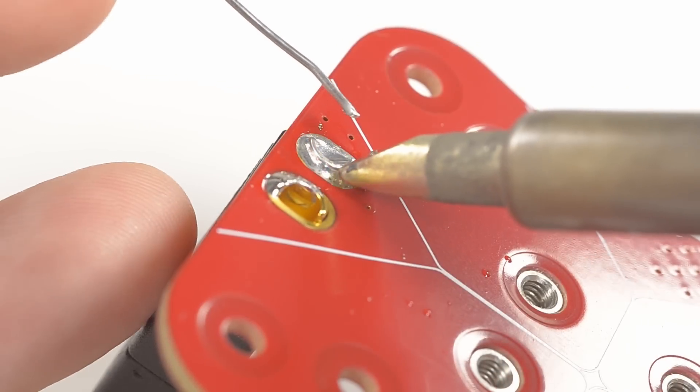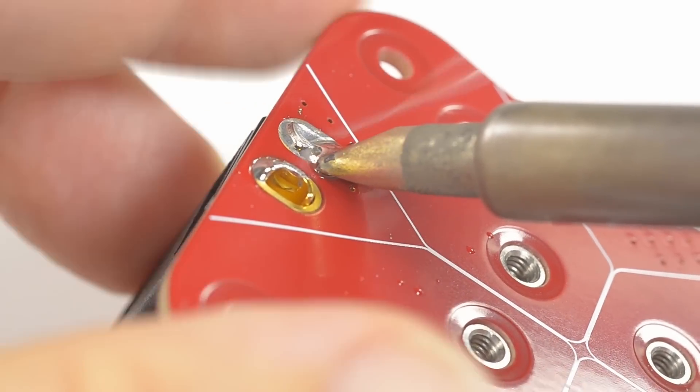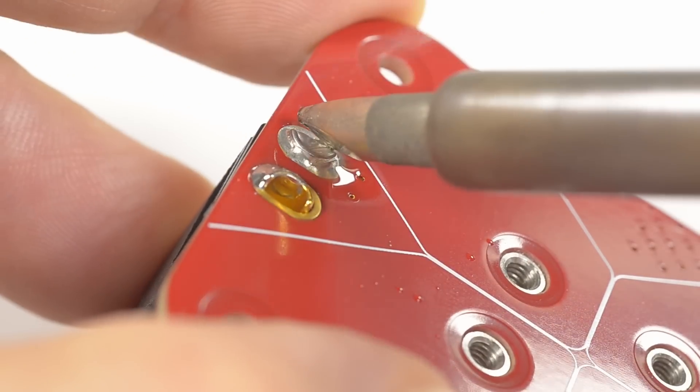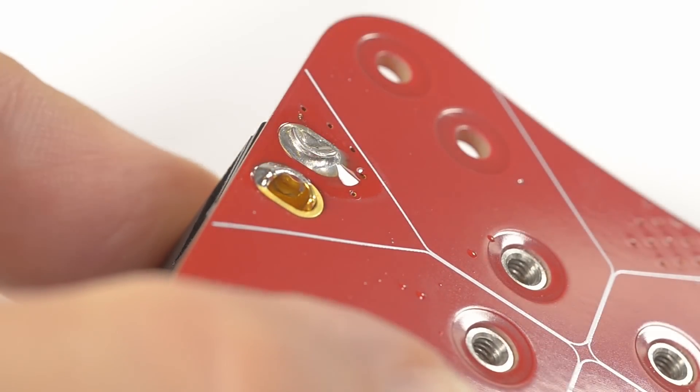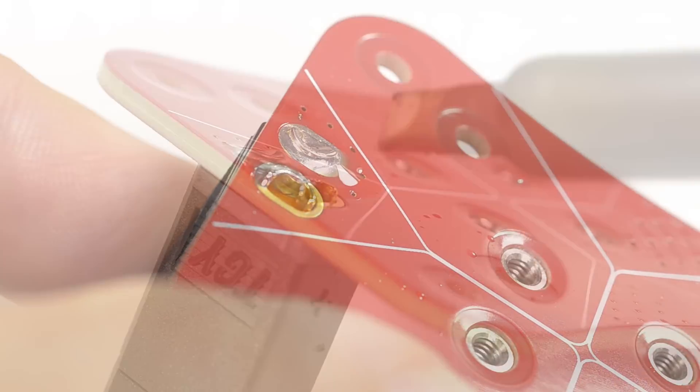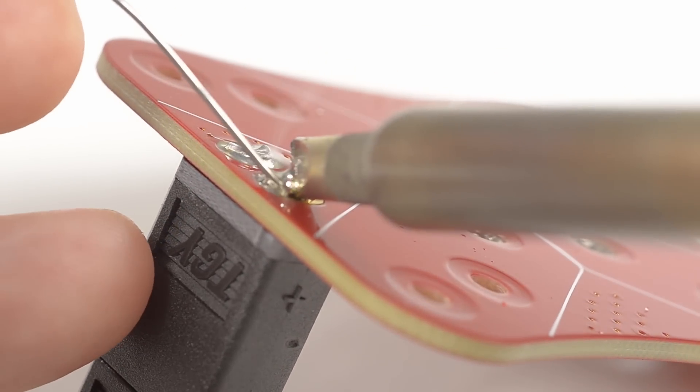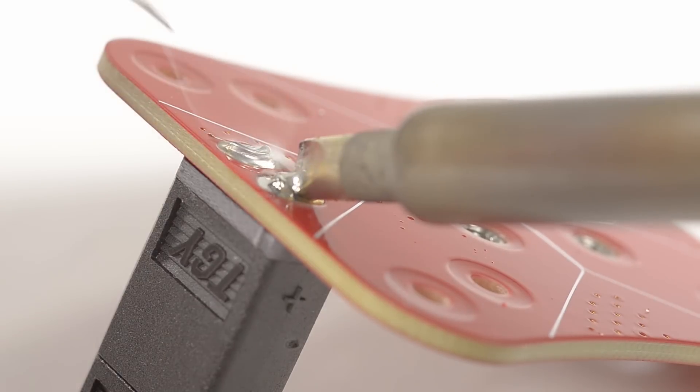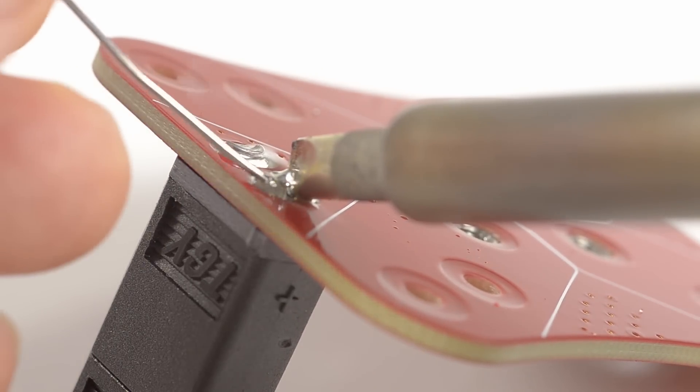Reorient the board if needed to get at a different area and once heated through melt the whole lot together and let it cool. Repeat for the other side getting a good solder bridge with the solder between the XT60 and the PDB.